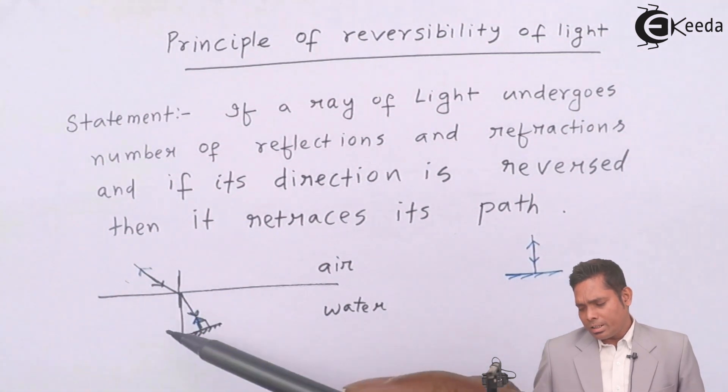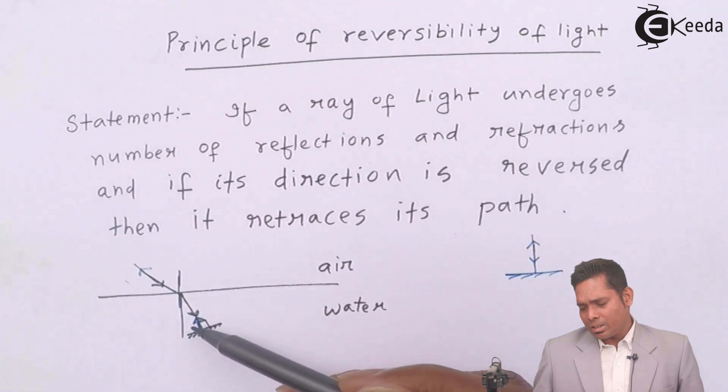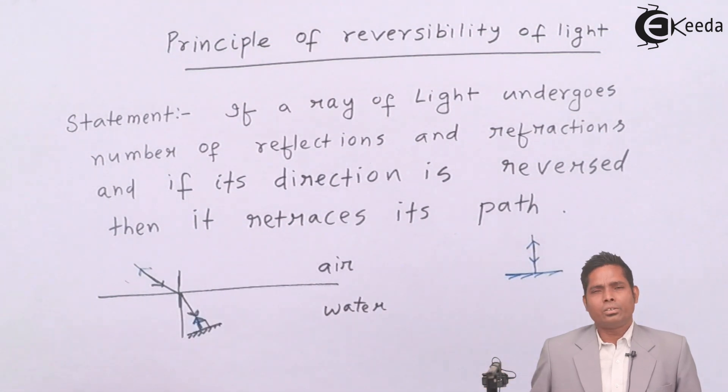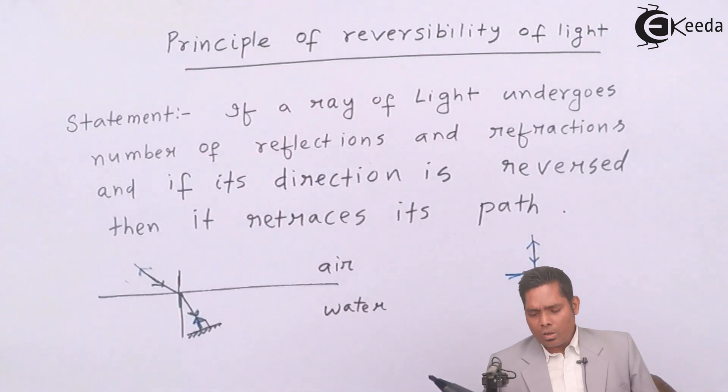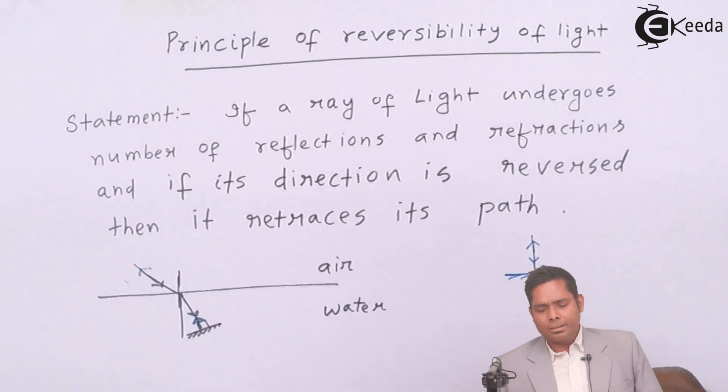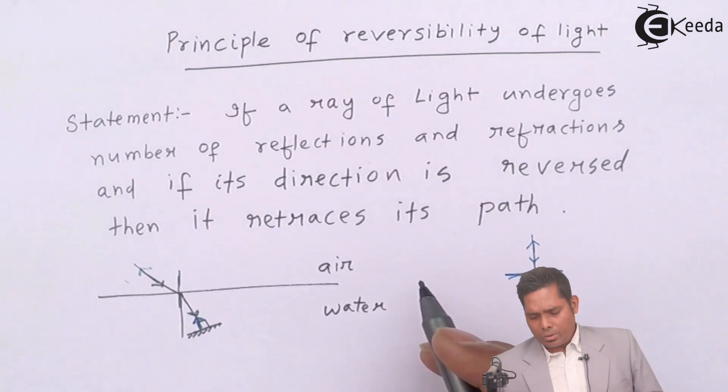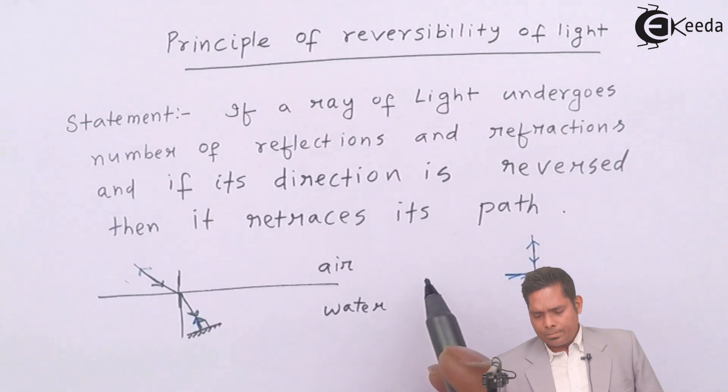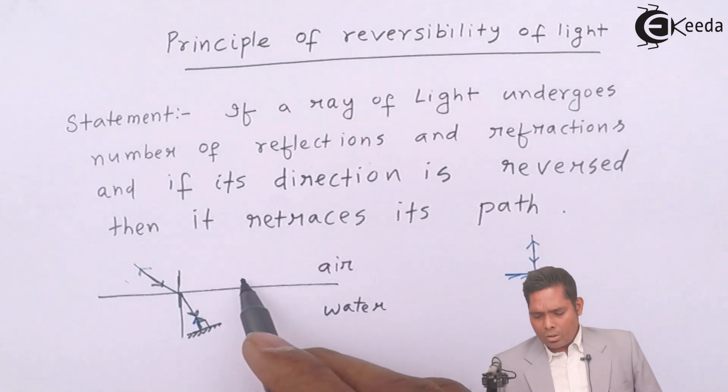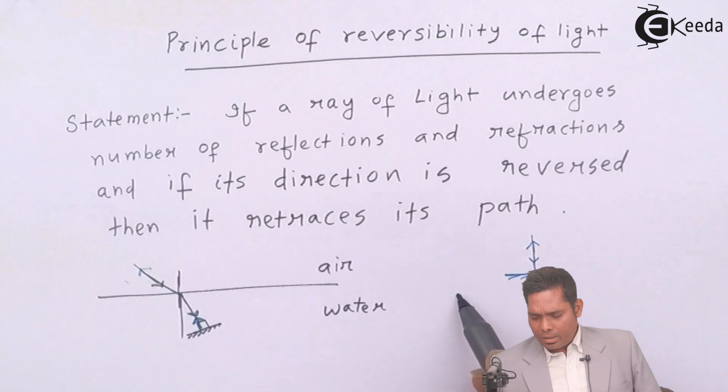Since the ray is reflected back in this direction, then it will follow the same path, retraces the same path. This is called Principle of Reversibility of Light. From this, we can conclude that mu of air here or mu of water here. This is mu air. This is mu water.